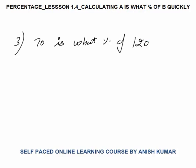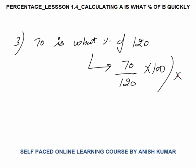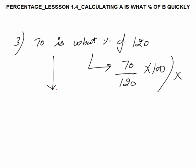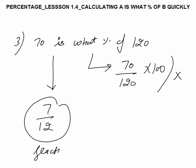Example 3: 70 is what percent of 120? The normal way is 70 by 120 multiplied by 100. But using the faster method, I calculate the fraction: 70 by 120, which simplifies to 7 by 12. Now I need to convert this fraction into a percentage and that will be my final answer.